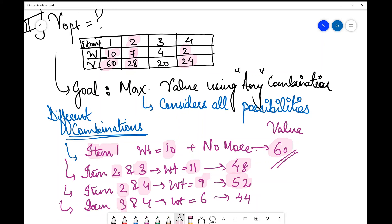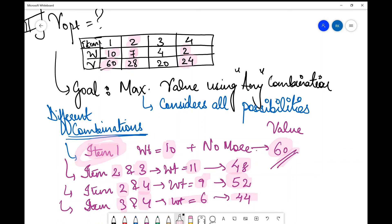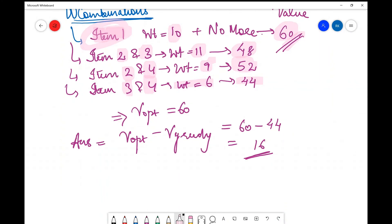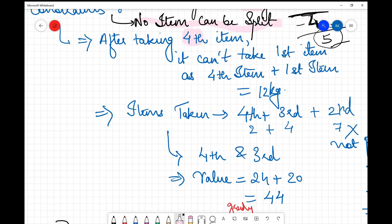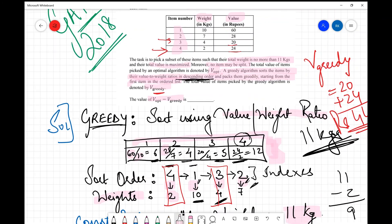Similarly for 3 and 4 the total weight becomes 6 and the profit becomes 44 which is same as V_greedy. So the maximum value which I am getting over here is with the item 1 which is 60. So V_opt is 60 over here. Then the final answer that you need to compute over here is V_opt minus V_greedy which is 60 minus 44 which is 16. So the final answer for this particular question is 16 that I'll write over here and this is how we solve such question.